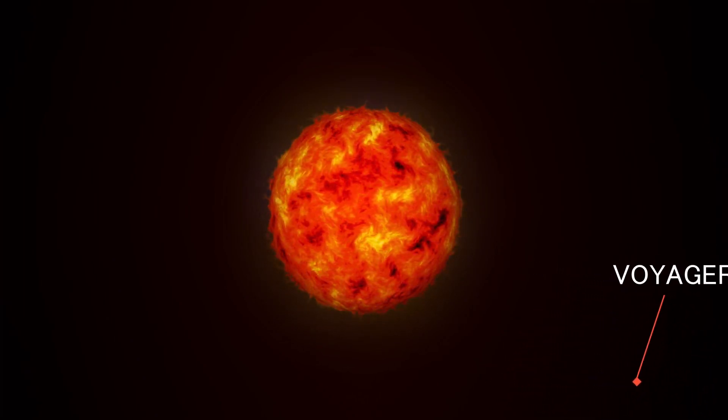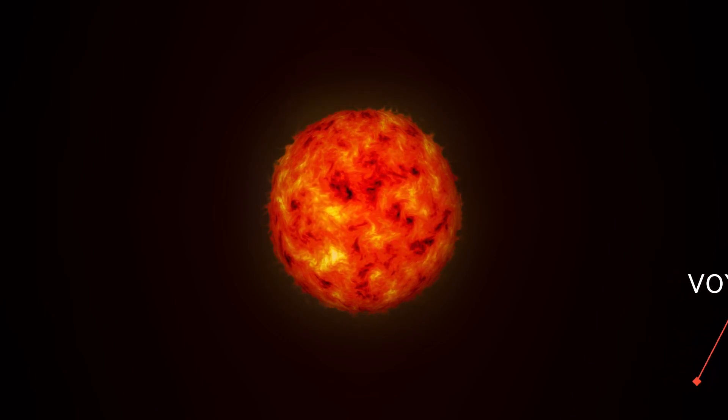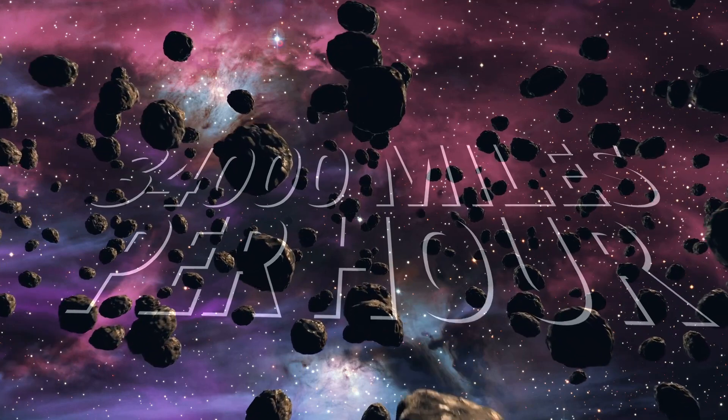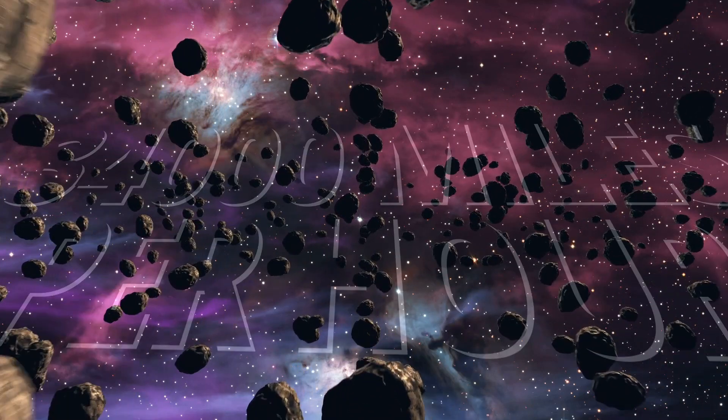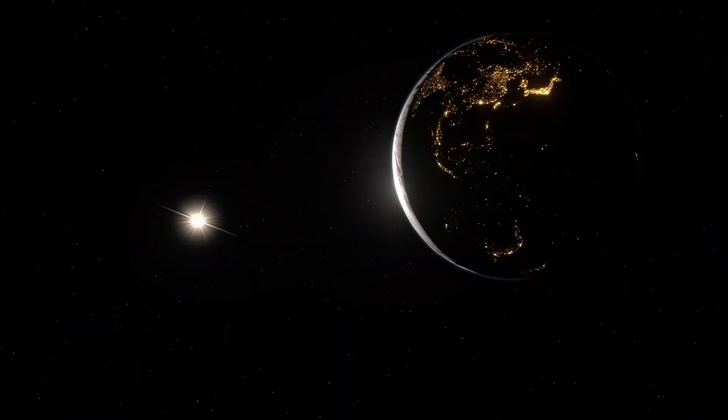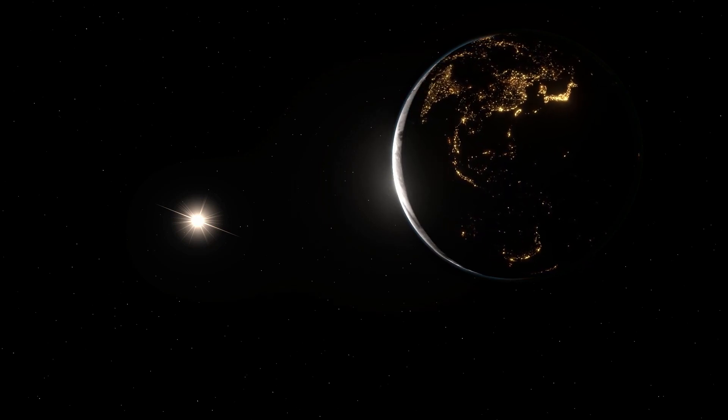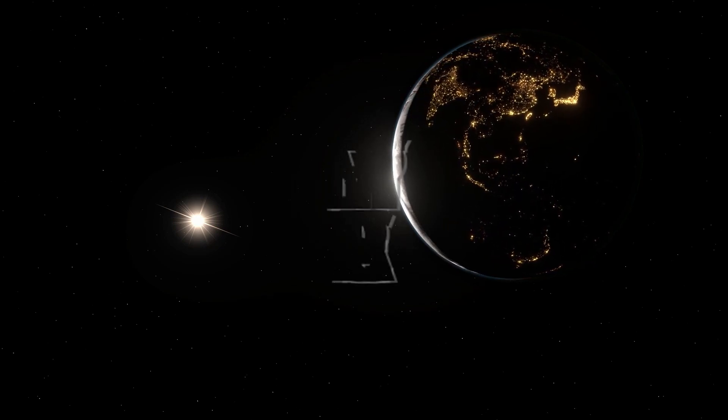Since then, Voyager 2 has only grown more and more distant, now leaving our solar system behind at a velocity of 34,000 miles per hour. In 2018, more than 41 years after its launch, Voyager 2 crossed the threshold between our solar system and interstellar space.